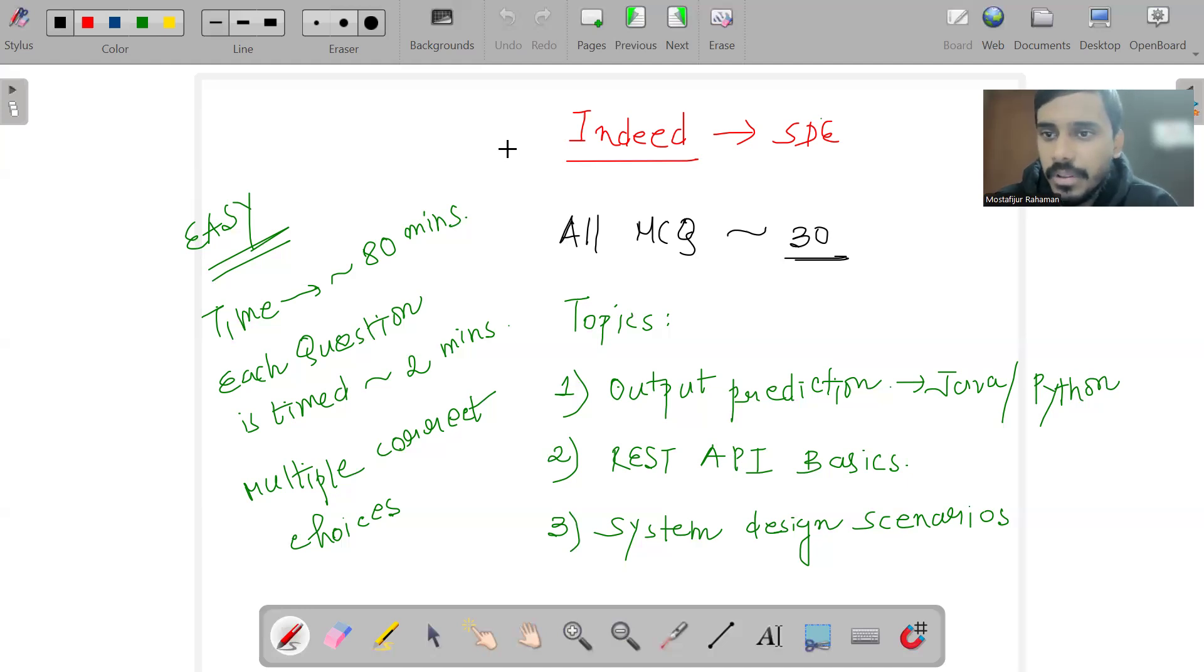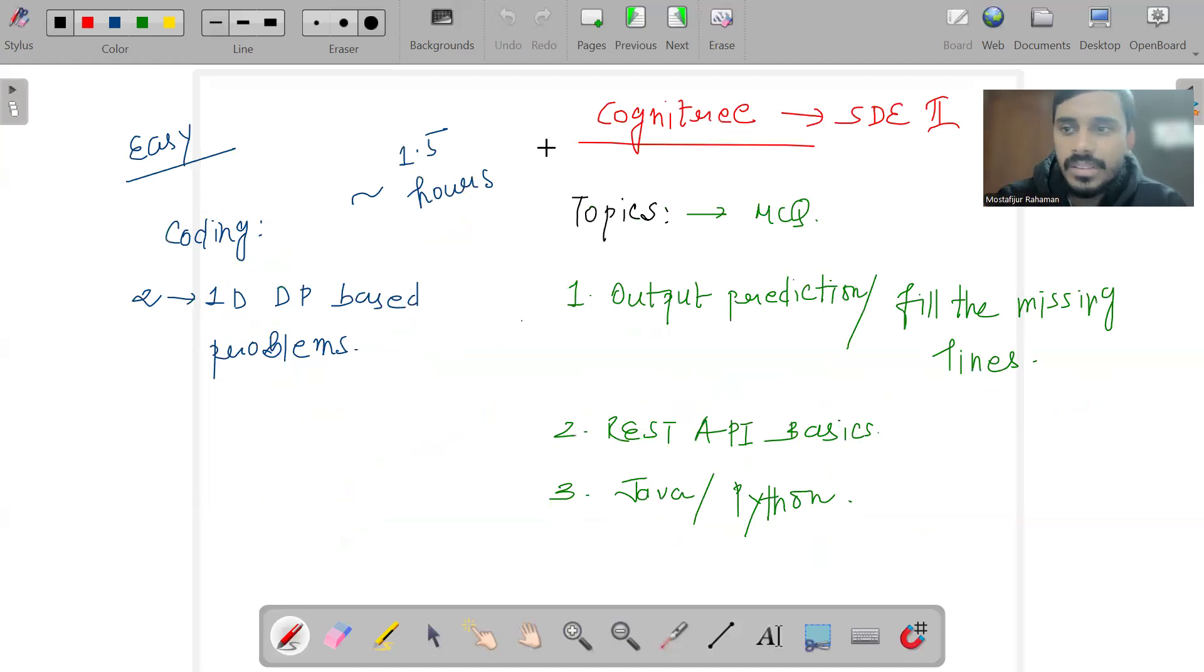There were system design scenarios where they give you certain options and ask in what scenarios you would consider caching. There were multiple these kinds of problems. Overall, the OA was interesting. I was able to finish within 30 to 40 minutes and I'm waiting for the results.